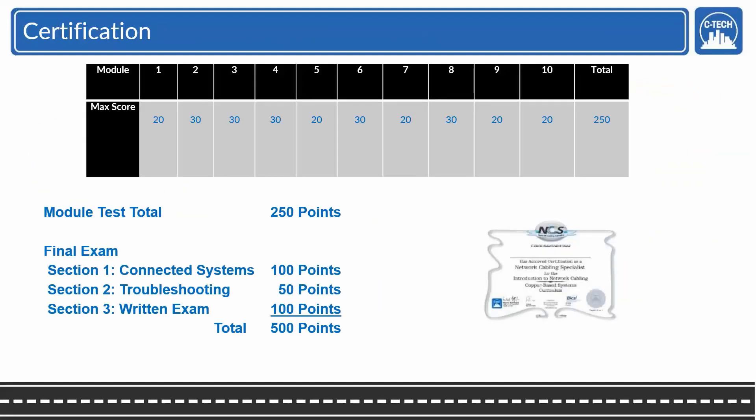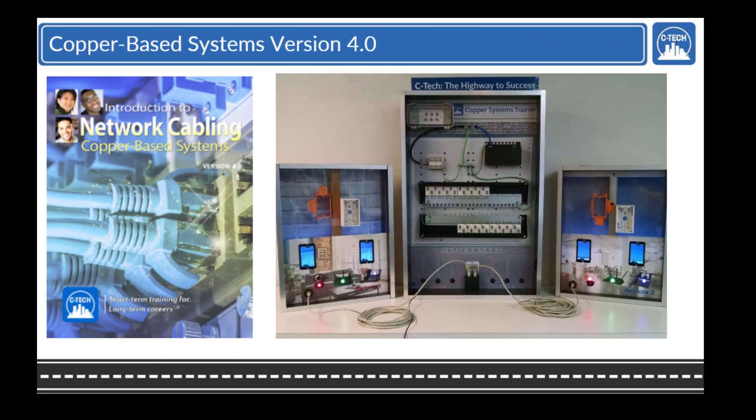Assessment in the course is 250 for the module test scores. Of course we have a three-part final that counts for the other 250 for a total of 500. And thank you. This has been an overview of Copper Systems 4.0.